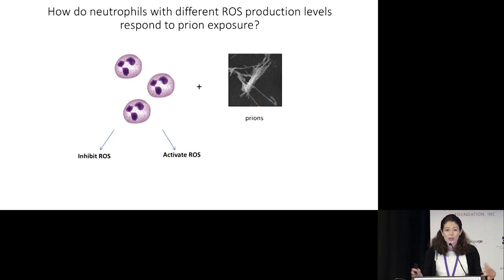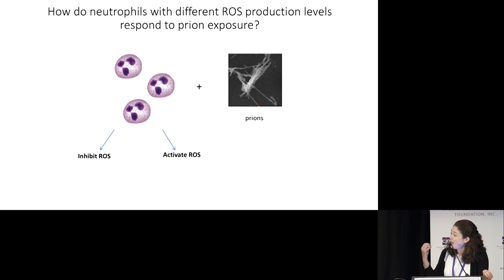or really promote the production of these ROS disinfectants. And I can take these neutrophil populations, look at them in a dish with prions, to see how different levels of this natural disinfectant production influence the outcome on prions.